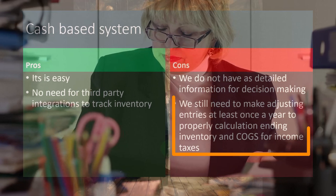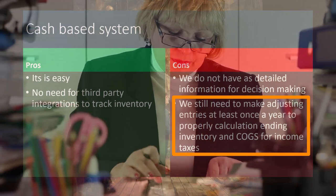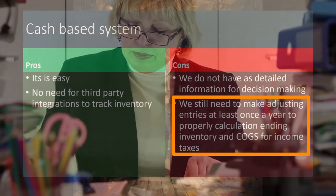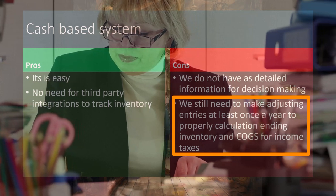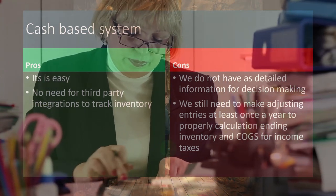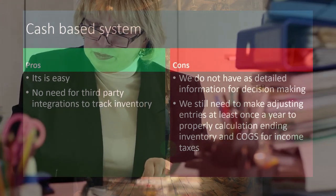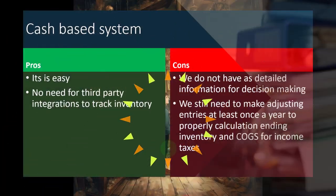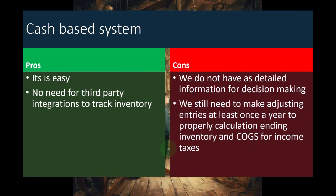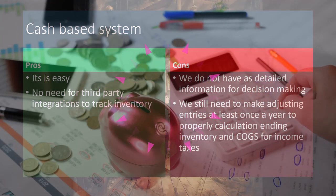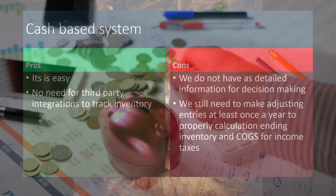We still need to make adjusting entries at least once a year to properly calculate ending inventory and the related cost of goods sold for income taxes. In other words, we're doing the easy thing — just expensing, not dealing with the inventory asset account or accrual concepts — however, at least once a year the tax code may force us to deal with those accrual concepts. We'll still need to value and count inventory, dealing not just with units but also dollar amounts, so we'll discuss methods to handle that in future presentations.